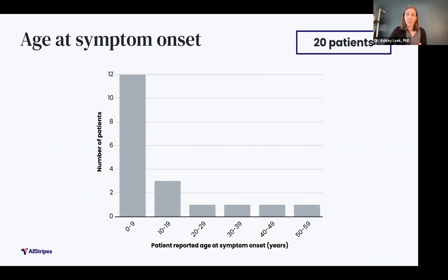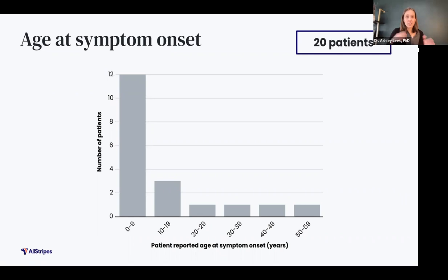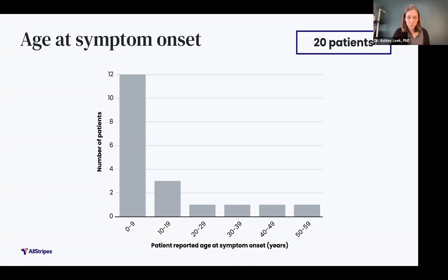In the survey, we asked patients or caregivers three different questions. The first was the year at which symptoms began. The x-axis of this graph shows years of age combined by decade of life, such that ages zero to nine years old are shown in the first bar on the left side, and then subsequent decades to the right. The y-axis shows the number of patients who began showing symptoms in each of these age ranges. We found that the most patients in this cohort began showing symptoms in the first decade of life, which is consistent with previously reported ages of symptom onset, where most showed symptoms in the first two decades of life.